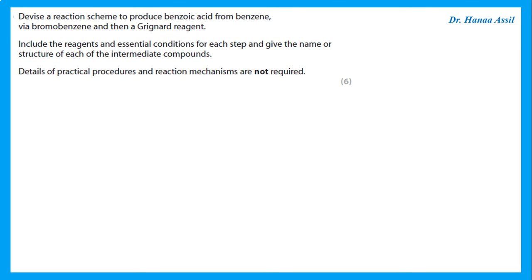Here is an example question on organic synthesis: devise a reaction scheme to produce benzoic acid from benzene via bromobenzene and then a Grignard reagent. We are given benzene and required to go through bromobenzene, the Grignard reagent, and then produce benzoic acid. Include the reagents and essential conditions, and give the name or structure of each intermediate compound.